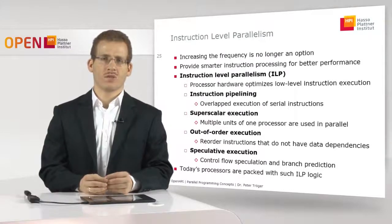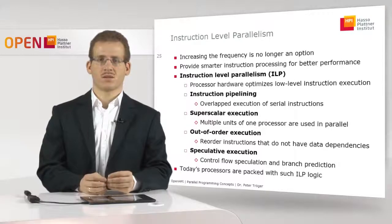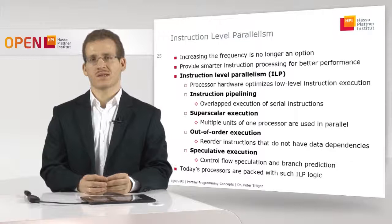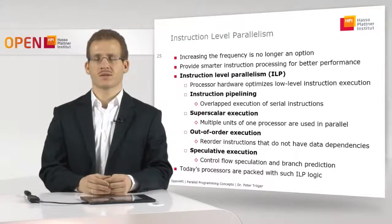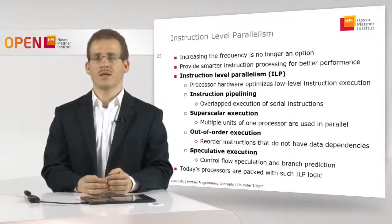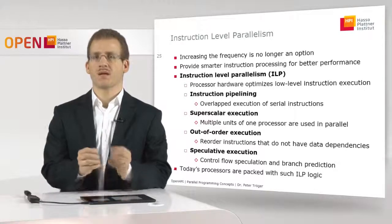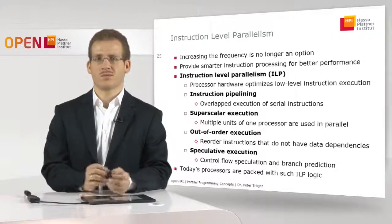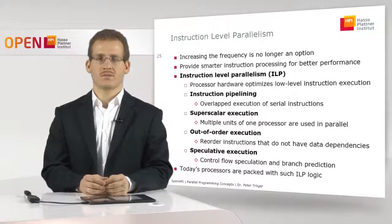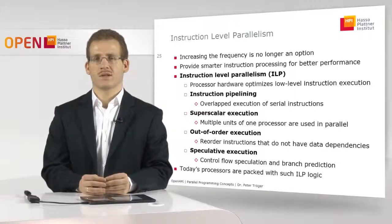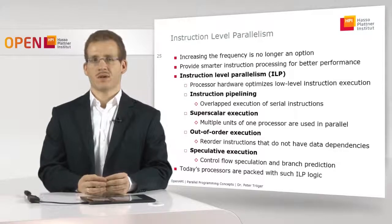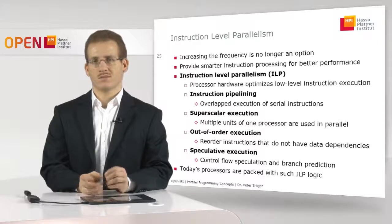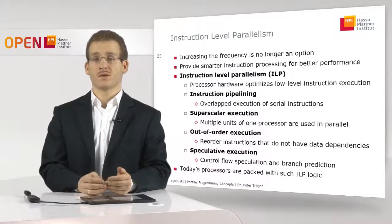A third way of dealing with smarter instruction processing inside the processor hardware is the so-called out-of-order execution, where the processor hardware decides to reorder your instructions in order to make them more efficient. This mainly works when you have instructions that are not depending on each other. Such data-independent, non-existent data dependencies can in many cases be detected by the hardware, which can then reorder activities to make hardware usage more efficient.